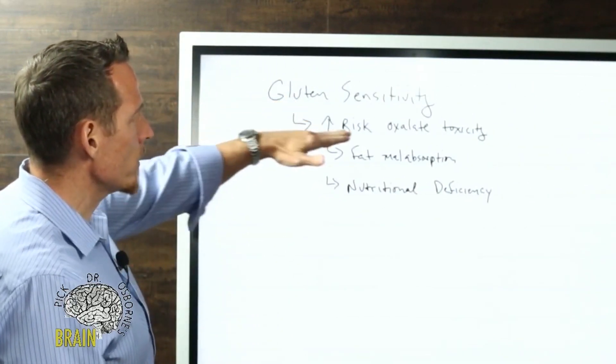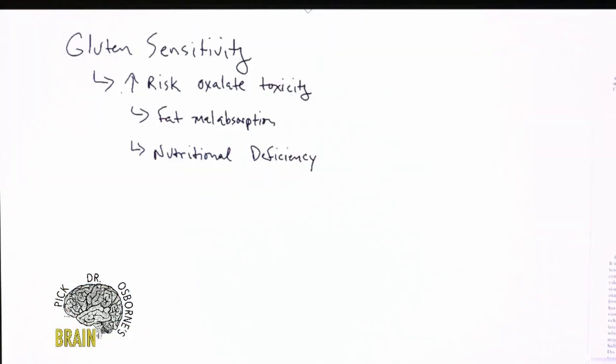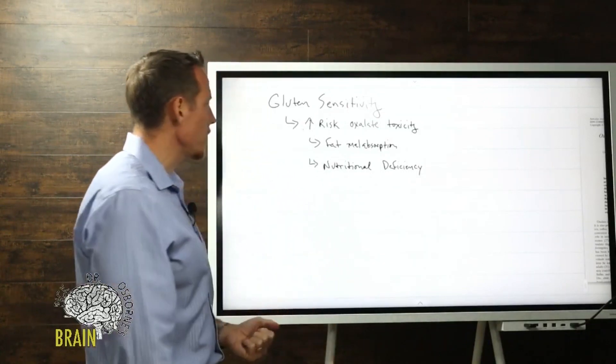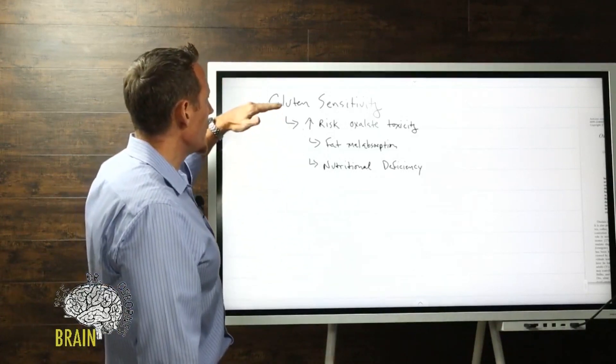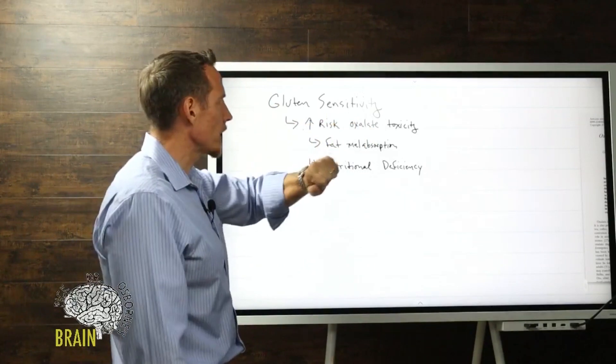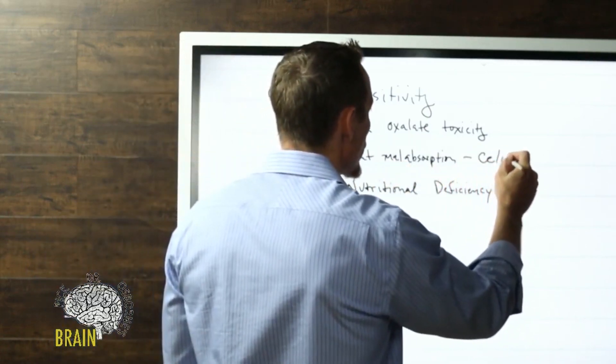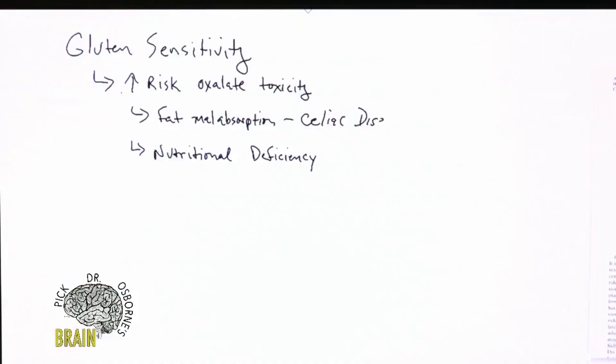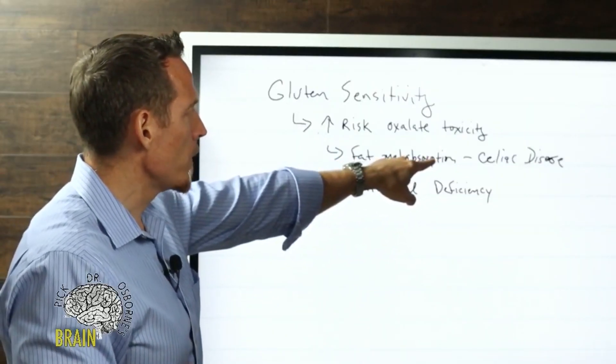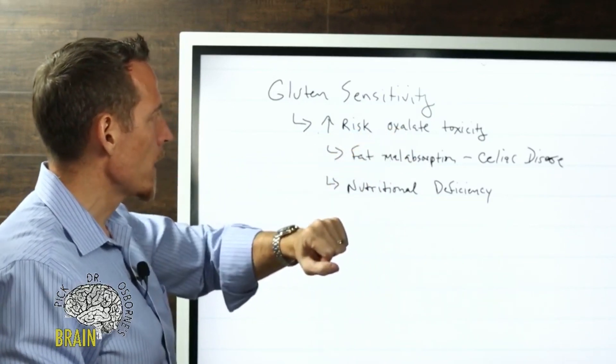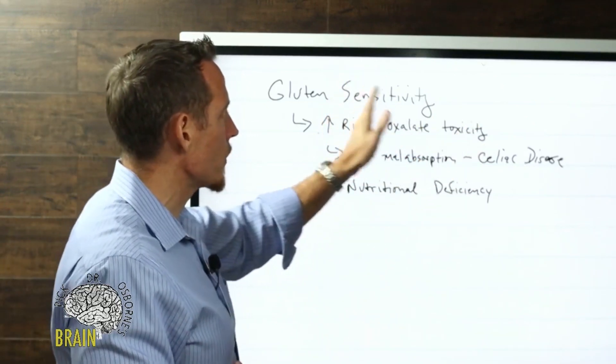Gluten sensitivity increases the risk for oxalate toxicity. Aside from the fact - let's maybe poll: how many of you have been tested properly for gluten sensitivity and have a gluten-related issue? Gluten sensitivity can increase the risk for oxalate toxicity, and there's several mechanisms why. One is fat malabsorption, especially in celiac disease. Celiac disease - one of the common hallmark side effects is damage to the villus, atrophy in the small intestine, which leads to fat malabsorption. Components of bile and fat can help to minimize oxalate absorption.